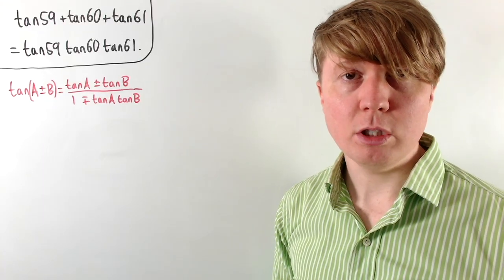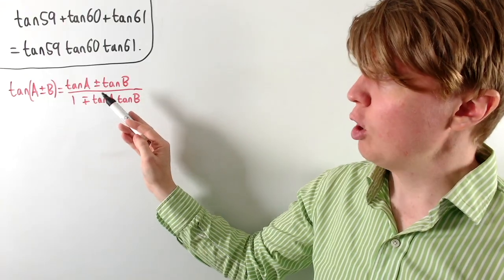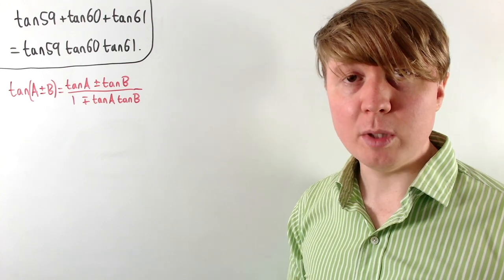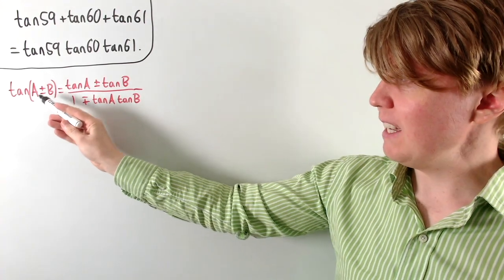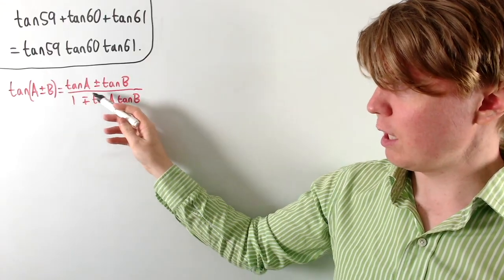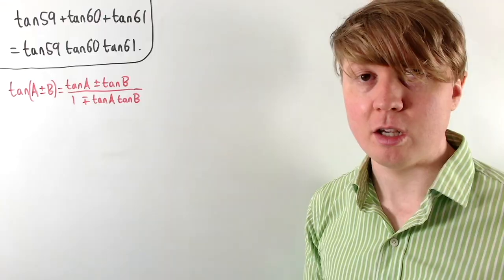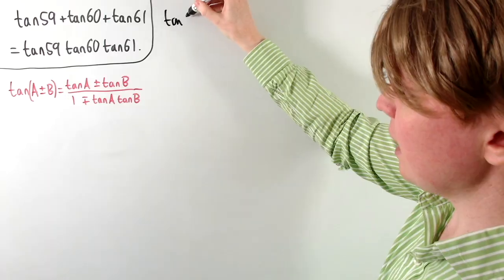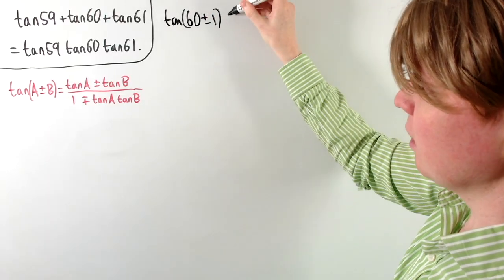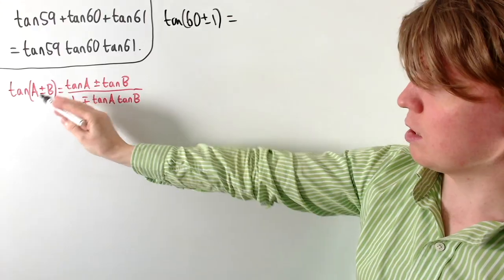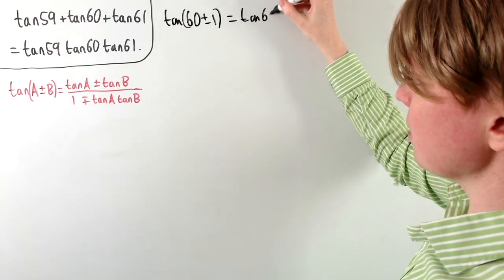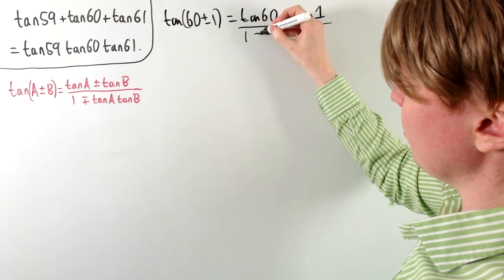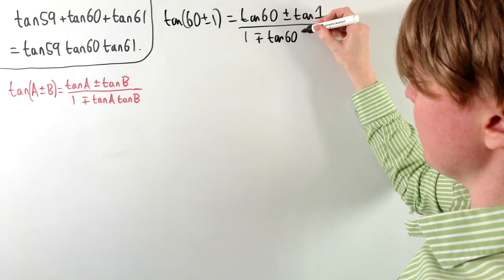To get started we're going to use the angle sum formula for tan, thinking of 59 as 60 minus 1 and 61 as 60 plus 1. This formula works for any values a ± b, so long as we don't end up with something undefined. So we can write tan(60 ± 1°) as tan60 ± tan1, all divided by 1 ∓ tan60·tan1.